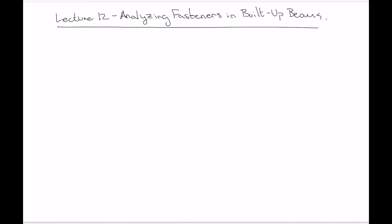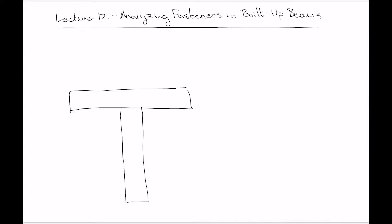Let's start by looking at an example beam — a T-beam with a big chunky cross section. We've got two pieces of wood joined with nails or screws, with a row of nails or screws going down the length of the beam. The longitudinal spacing between each nail is some variable distance, variable s.